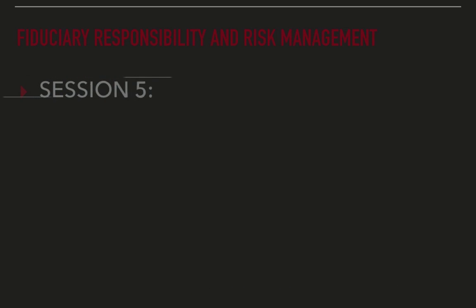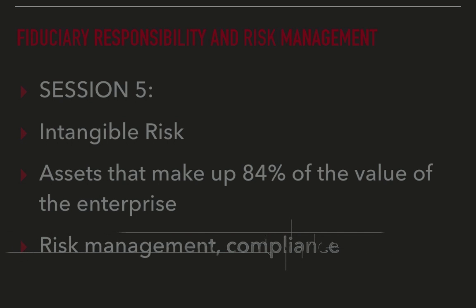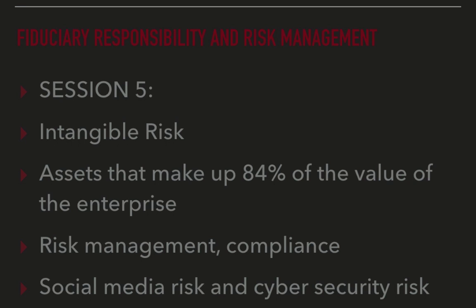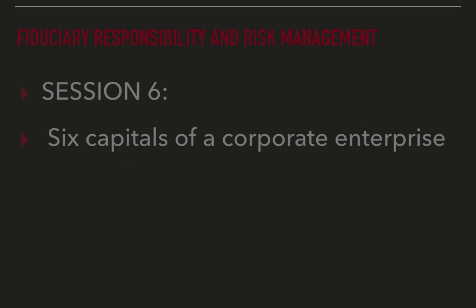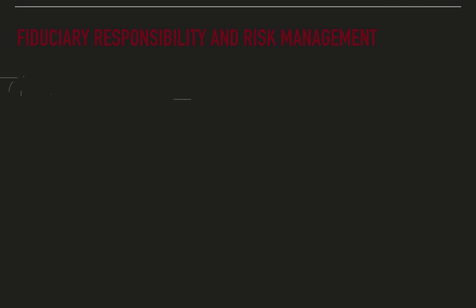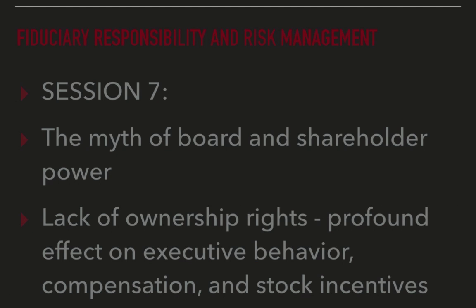In session five, we will introduce you to intangible risks — those hidden assets — the intangible assets that make up 84% of the value of the enterprise. We will approach this from a risk management, compliance, and fiduciary perspective. You will learn how to identify, measure, and quantify non-financial risk in order to protect or mitigate damage to the corporation. This will also include a discussion of social media risk and cybersecurity risk. In session six, we will present the six capitals of a corporate enterprise and discuss how traditional economic theory and economic capitalism misses out on these significant contributors to value creation within the corporate entity. In session seven, we'll discuss in depth the myth of board and shareholder power and how the lack of ownership rights by shareholder investors has had a profound effect on executive behavior, executive compensation, and compensation-based stock incentives for both board and senior executives.